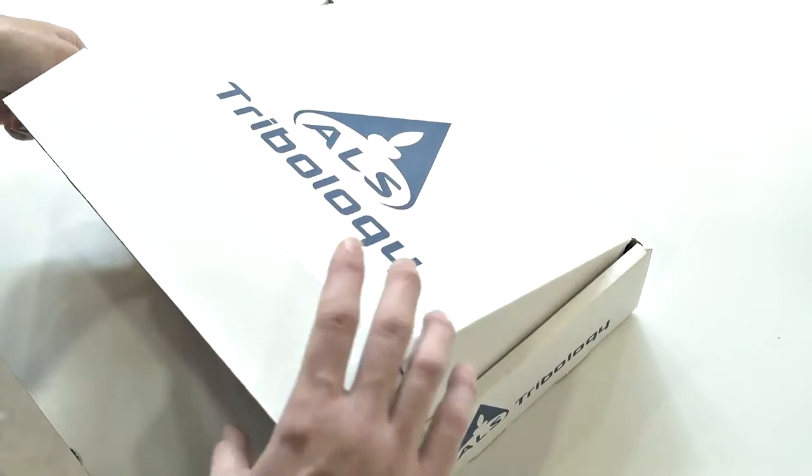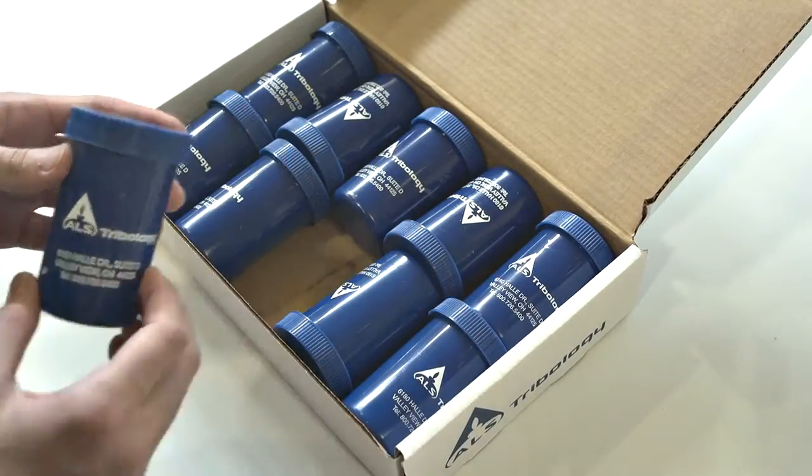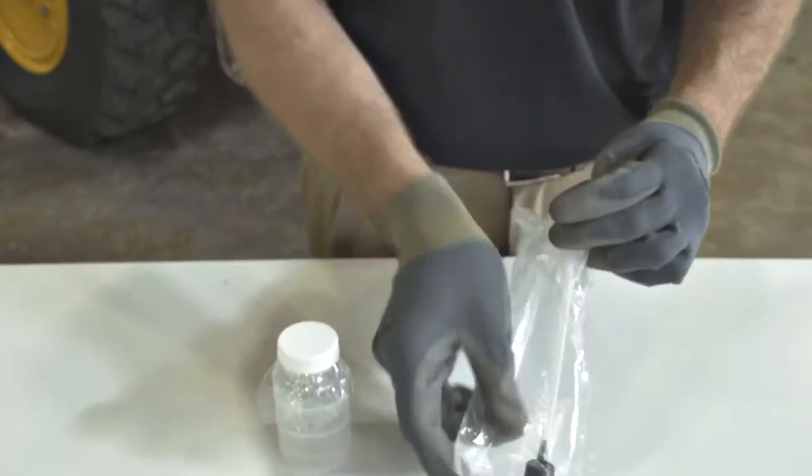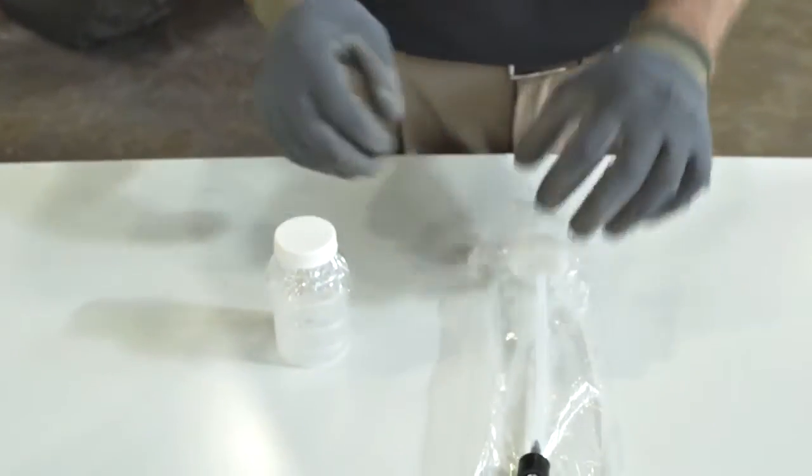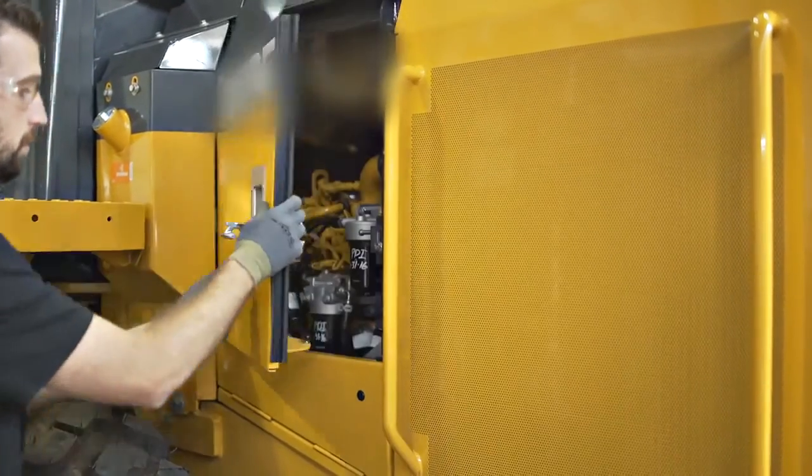Always use clean sample containers and equipment. Store sample bottles and sampling supplies so they stay clean and dry. Ideally, oil samples should be taken in a manner that is easily repeatable and effectively represents the actual condition of the oil in the equipment.